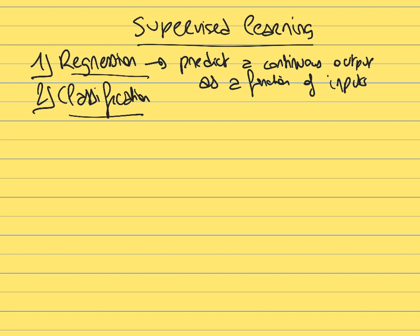For example, predicting house price: an input could be the house area (a continuous number in square feet) or a categorical variable like 'is the house in a good neighborhood?' — yes or no. In regression, you predict a continuous output (price), as opposed to classification where you predict discrete outputs.